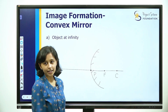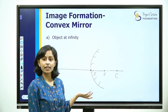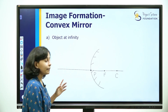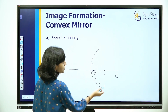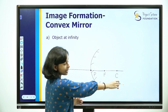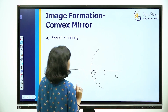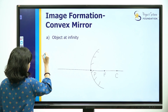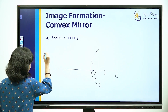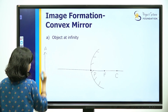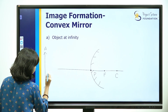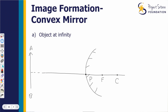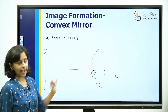This is the convex mirror image formation. The concave mirror situation is also given for reference. Here we have a very everyday situation. This is the principal focus and the center of curvature is on the right-hand side. In the first situation, the object is at infinity. So the incident rays are parallel to the principal axis.